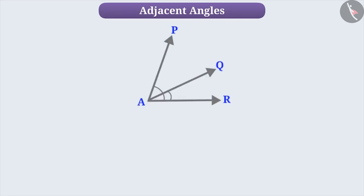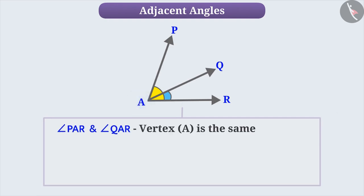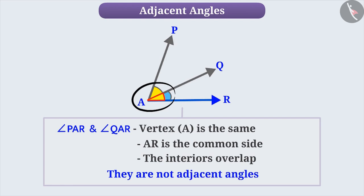Now, look at this figure. Do you think the angles shown here are Adjacent Angles? Think for a while. Did you get it? The vertex of both angles are the same. They also have a common side, but the interior of both angles are overlapping. Therefore, these angles cannot be called Adjacent Angles.